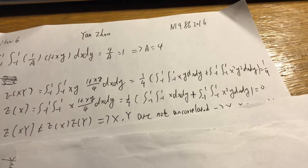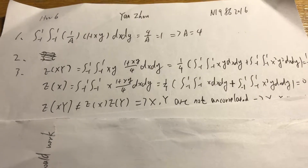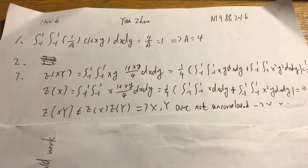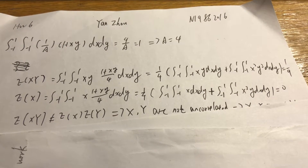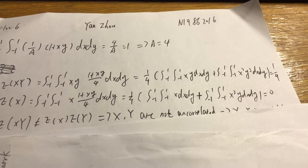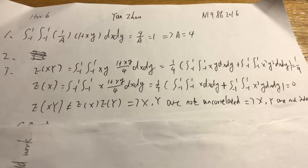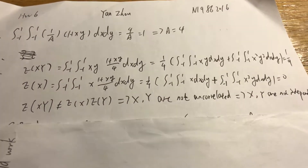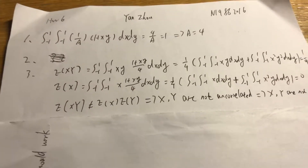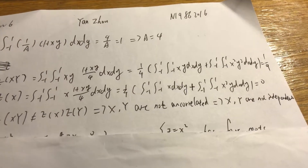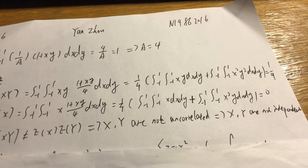That equals 1 over 9. And the integral of (1 plus xy) over 4 dx dy equals (1 over 4) times the integral of x dx dy plus the integral of x squared y dx dy, which equals 0. So according to these two results, E[XY] is not equal to E[X] times E[Y]. Therefore x and y are not uncorrelated, and x and y are not independent.